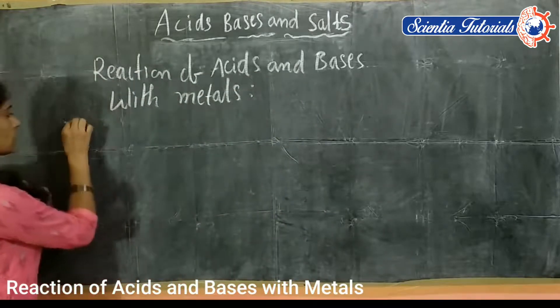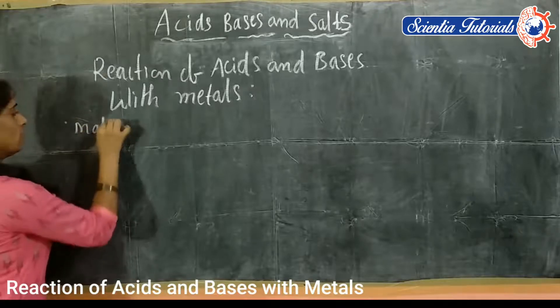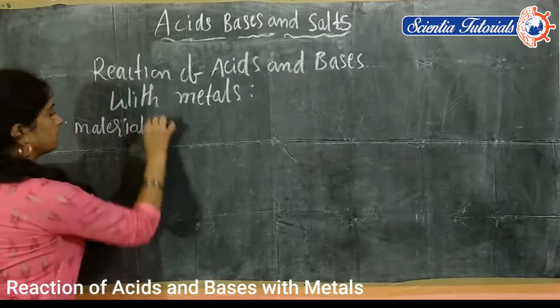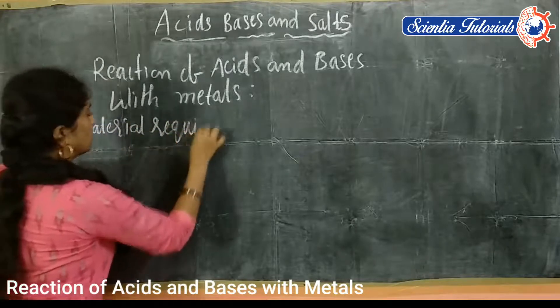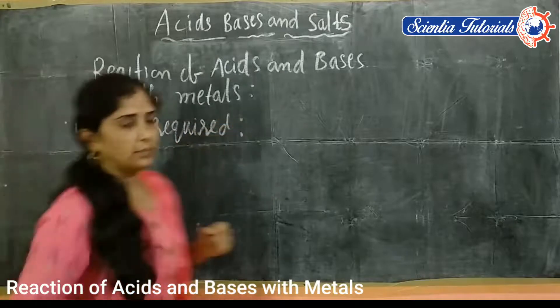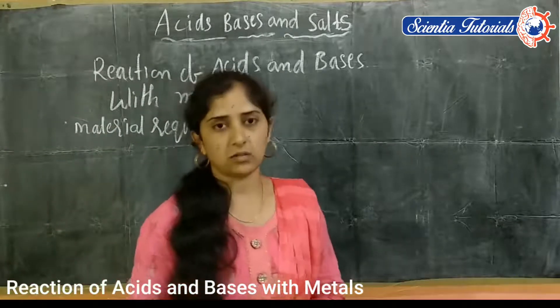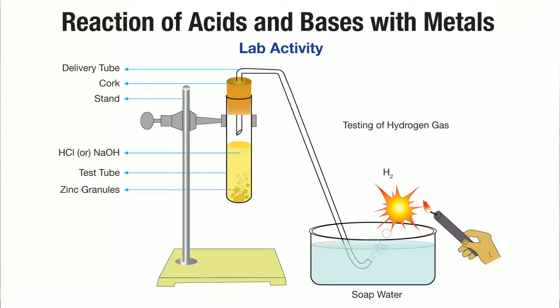What are the materials required? We have to take a retort stand, test tube, and delivery tube, one glass trough, zinc, hydrochloric acid, and zinc granules. These are the required materials for this lab activity.